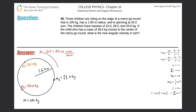Problem number 40: three children are riding on the edge of a merry-go-round that is 100 kilograms, has a 1.6 meter radius, and is spinning at 20 rpm. The children have masses of 22, 28, and 33 kilograms. If the child who has a mass of 28 kilograms moves to the center of the merry-go-round, what is the new angular velocity in rpm?